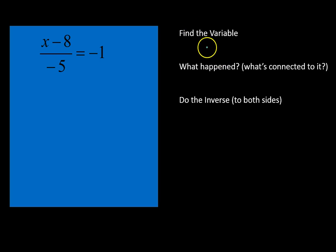For our second to last question, we have x minus 8 divided by negative 5 equals negative 1. There's so many negatives in this, I just feel a negative vibe coming from it. Our variable x has two things happening to it: being divided by negative 5 and subtracting 8.